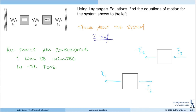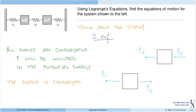When we derived Lagrange's equations, we discussed three kinds of forces: conservative forces derived from a potential function, constraint forces that enforce kinematic constraints and do no work, and other non-conservative forces. Here, all forces are derived from springs, so the system is conservative. In particular, there are no non-conservative forces acting on these objects.